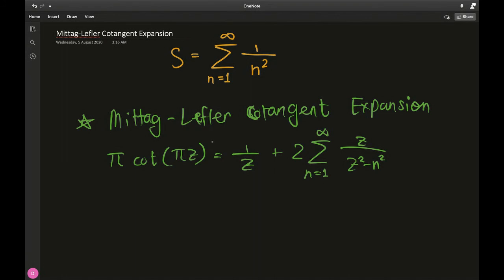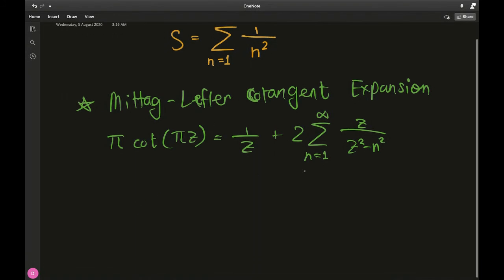So what I am going to do is I am just going to isolate this sum a little bit. So I am going to take the 1 over z on that side. We have π times cotangent of πz minus 1 over z be equal to sum from n equals 1 to infinity of z over z squared minus n squared.